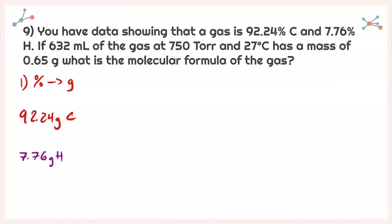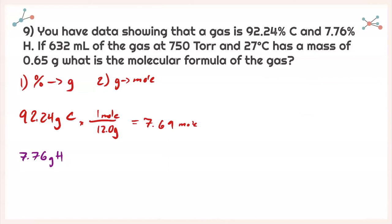Next, convert from grams to moles. For carbon: 92.24 grams divided by 12.0 grams per mole gives 7.69 moles. For hydrogen: 7.76 grams divided by 1.01 grams per mole gives 7.68 moles of hydrogen.